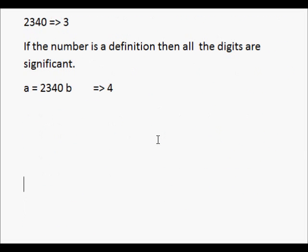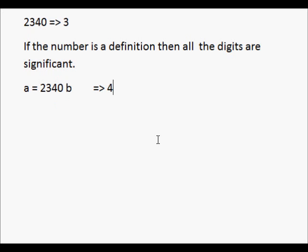Now, if the number is a definition, then all the numbers are significant. Therefore, if a equals 2,340 of b, then there are 1, 2, 3, 4 — four significant figures.